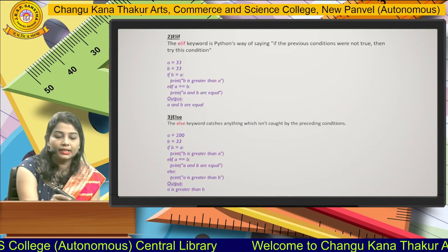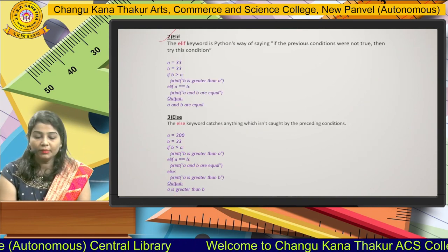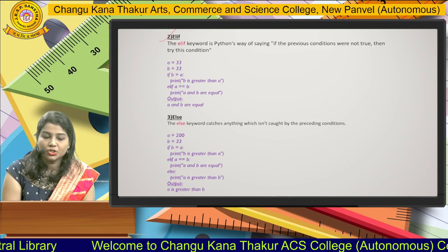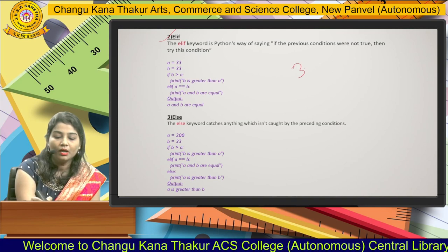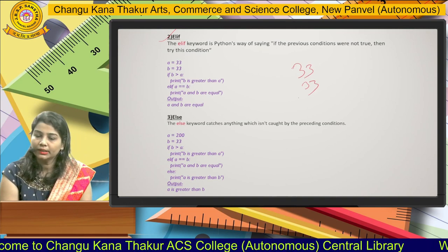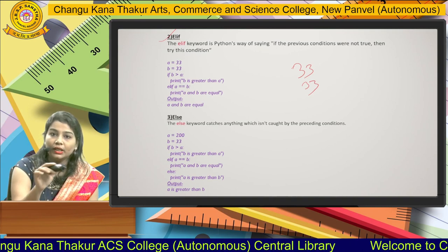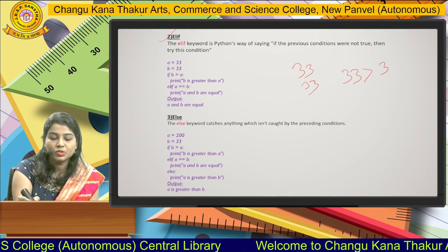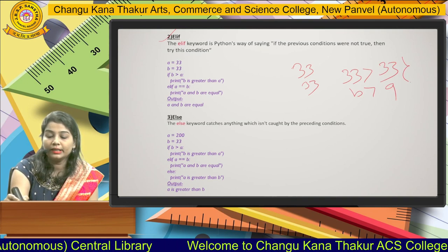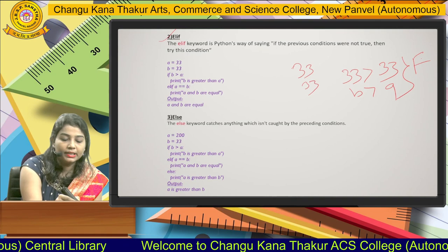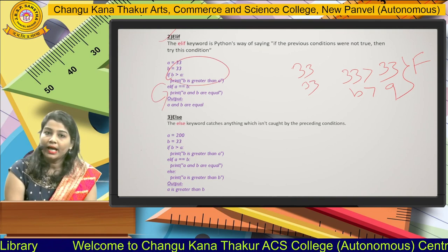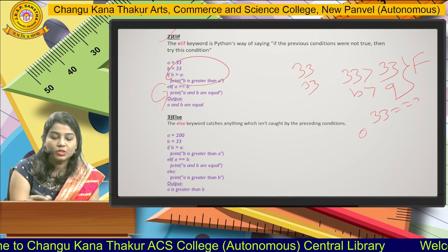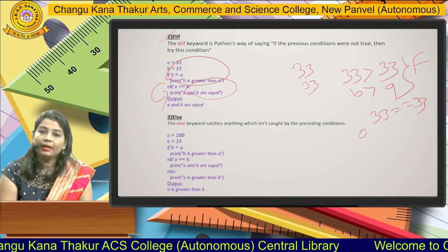The second statement is elif. elif means: if the previous condition was not true, then try this condition. In this example, a equals 33 and b equals 33 — both are equal. The if condition '33 is greater than 33' is false, so that block gets skipped. We move to elif: a equals equals b, meaning 33 equals 33, and the output is 'a and b are equal'.